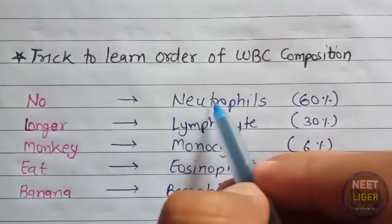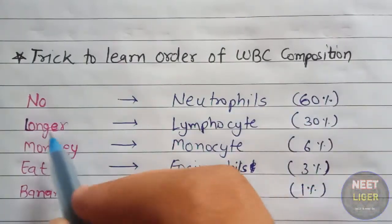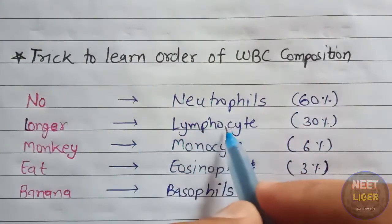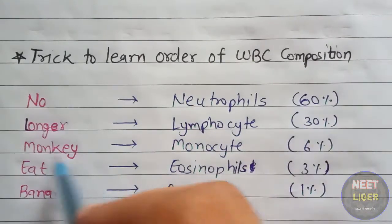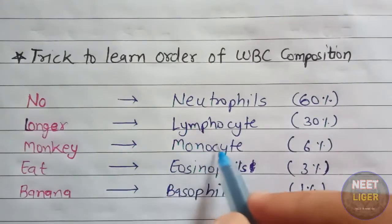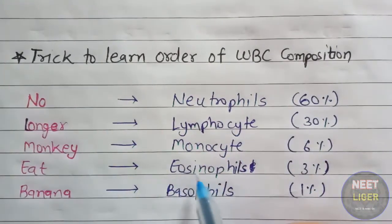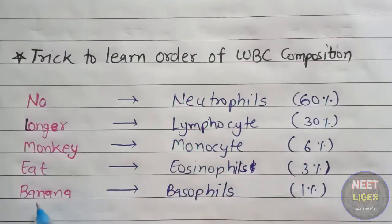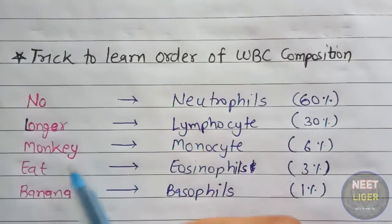No — neutrophil, 60%. Longer — lymphocyte, 30%. Monkey — monocyte, 6%. Eats — eosinophils, 3%. Banana — basophil, 1%.